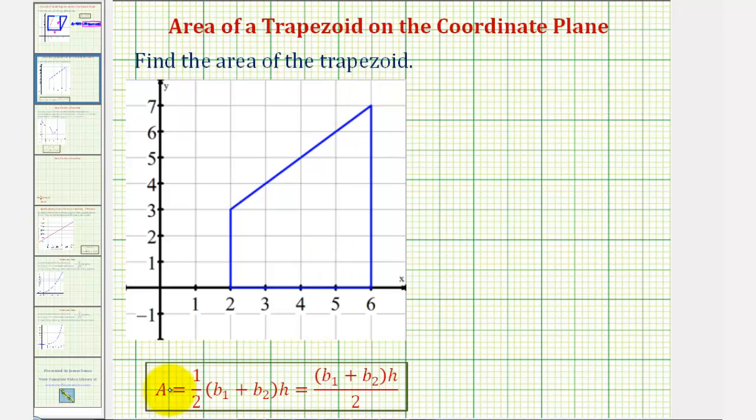The area is given by one-half times the quantity b sub one plus b sub two times h, where b sub one and b sub two are the two bases, or the length of the two parallel sides, and h is the height, which is the distance between the two parallel sides.